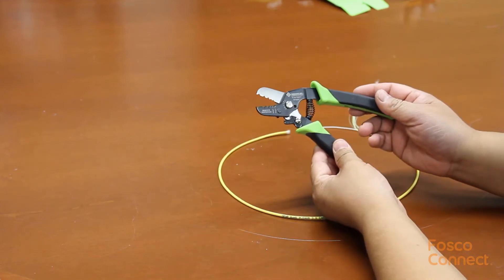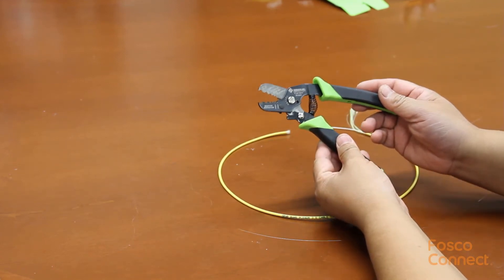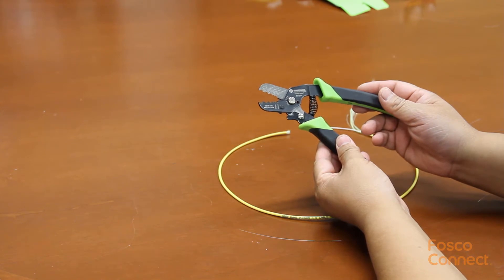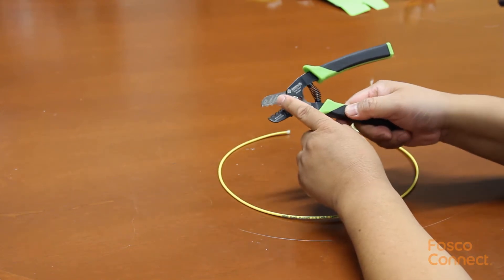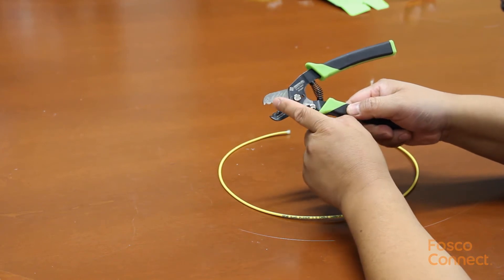This is the Greenleaf PA-1171 5-in-1 Optical Fiber Stripper. This fiber stripper has five notches with corresponding marks showing each notch's purpose.